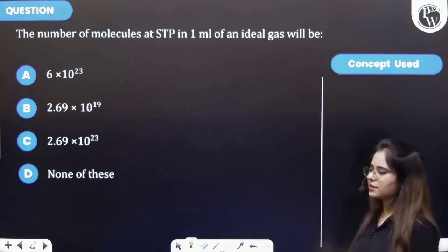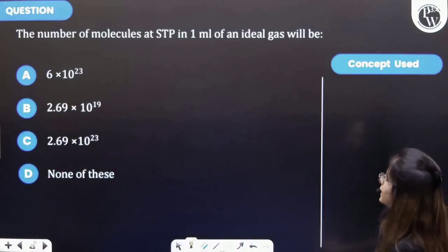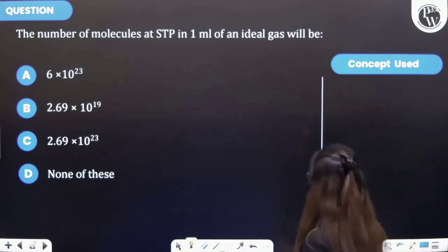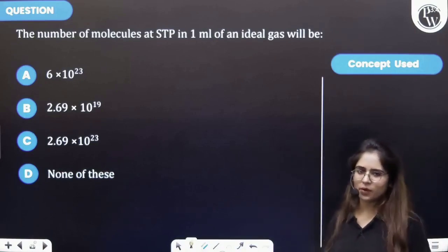Let's see this question. The question says that the number of molecules at STP in 1 ml of an ideal gas will be. So firstly see the key concept of this question.